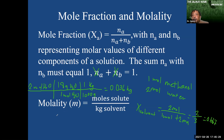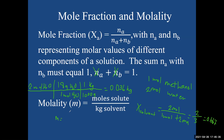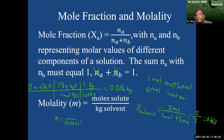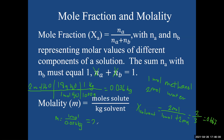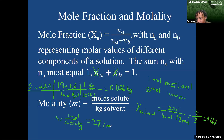So when we calculate the molality, it's going to be 0.036 at the bottom and one mole on top, giving us 27.777. And we use that little m — sometimes they put a line underneath it to let us know that it's not mass.